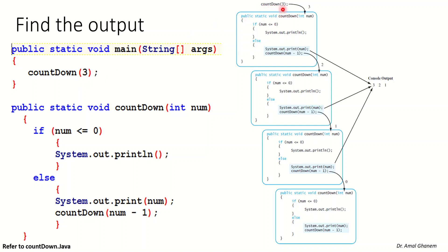Let's trace the example with countdown(3). We call our method and check: is three zero? It's not, so we go to the else part. We output num, which is three — that's our first output. Then we call the method sending num minus one, which is two. We check again: is two zero? It's not, so we go to the else part and output two as our second output.